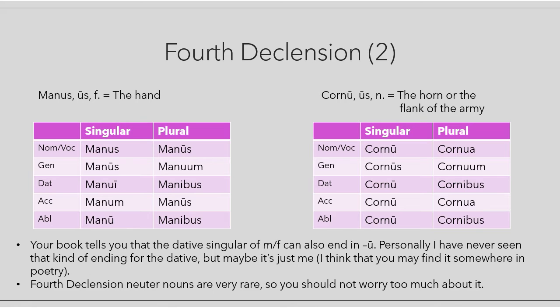Let's see how the words are declined. For the masculine and the feminine I chose a very frequent word: 'manus, manus' — the hand. Singular: manus, manus, manui, manum, manu. Plural: manus, manum, manibus, manus, manibus. I put nominative and vocative together because they are the same.